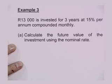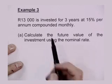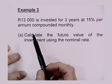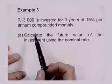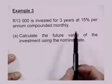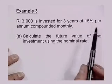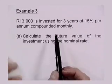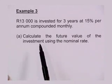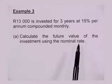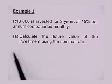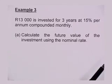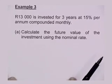Let's now look at another example. R13,000 is invested for three years at 15% per annum compounded monthly. Calculate the future value of the investment using the nominal rate.